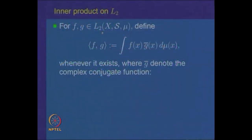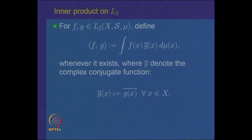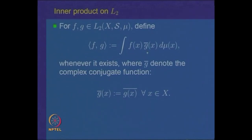For functions f and g in L2, keeping in mind that our spaces are complex valued, we define the inner product (also called dot product) of f with g as the integral of f(x)·ḡ(x) dμ(x), where ḡ is the complex conjugate of g. This is perfectly similar to the inner product in C^n, where one takes the sum of ai·b̄i.